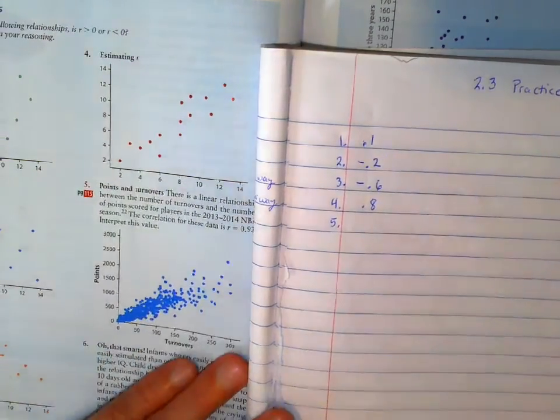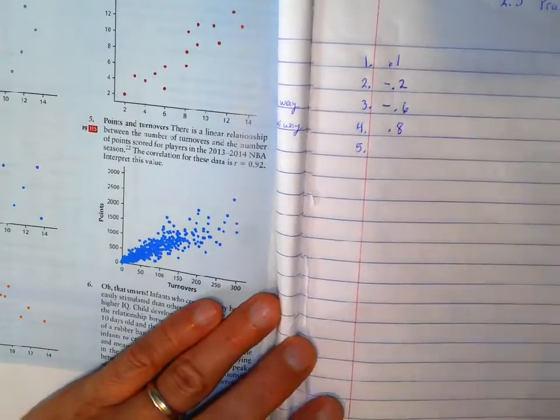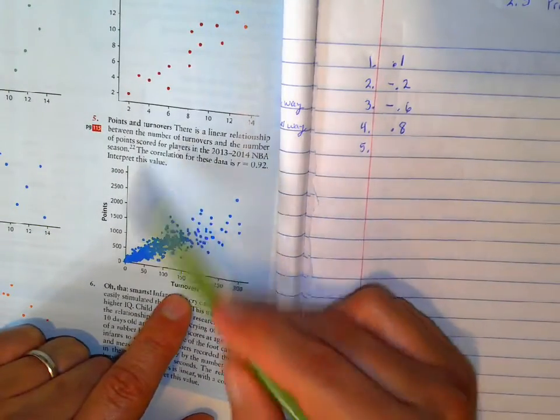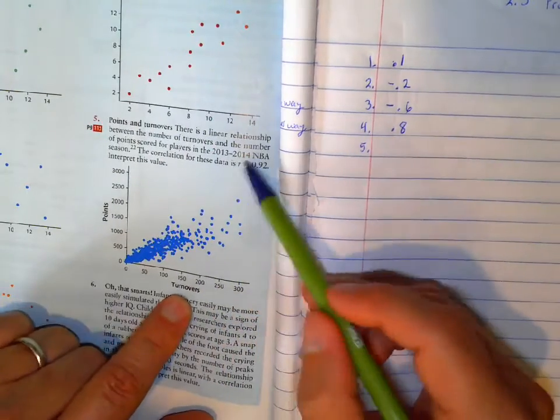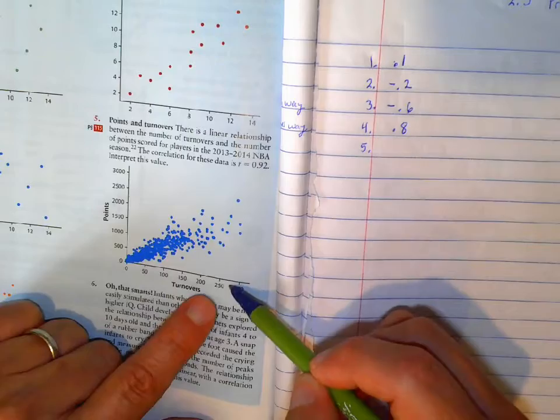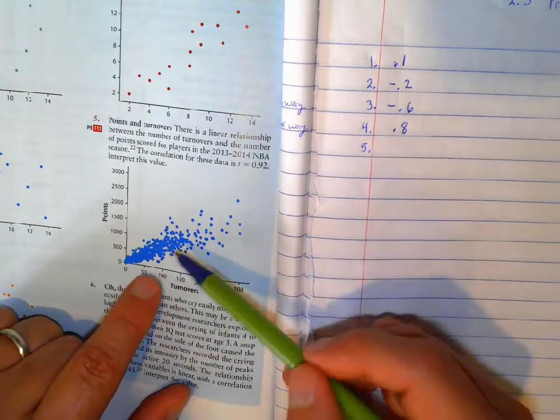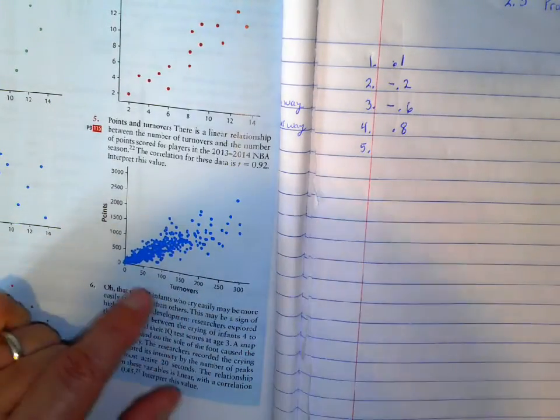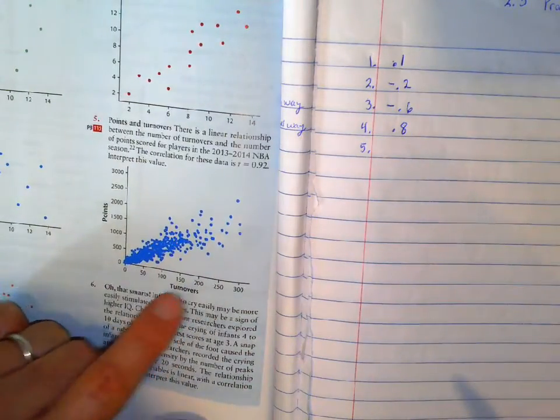Number 5, there's a linear relationship between number of turnovers and the number of points scored in the 13-14. And it has a correlation of 0.92. So as there's more turnovers, there's also more points. Probably has to do with playing time, right? The more you play, the more turnovers you're going to have, and the more points you're going to have.